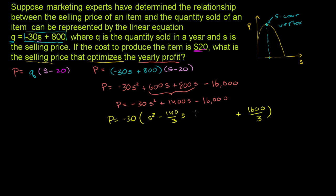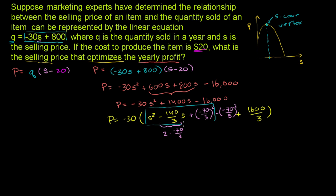Now we can add and subtract a term so that the first three terms become a perfect square trinomial. Since -140/3 = 2 × (-70/3), we want to add and subtract (-70/3)². So we add plus (-70/3)² and subtract minus (-70/3)², which means we haven't changed the equation at all — and this lets us form a perfect square trinomial.